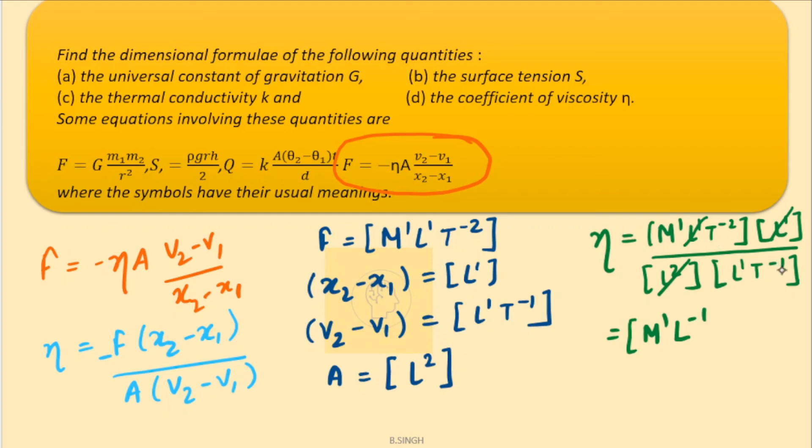L minus 1 and T minus 2 and minus 1 when T minus 1 goes on the top, it will be added. Because there is already a negative sign, minus minus will be plus and it will give you minus 1 here. So, this is the dimensions of viscosity.